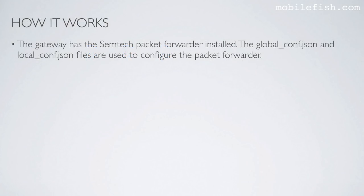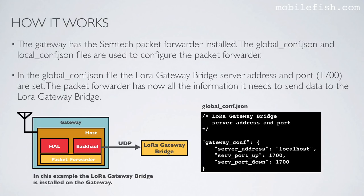The gateway has the Semtech packet forwarder installed. The global_config.json and local_config.json files are used to configure the packet forwarder. In the global_config.json file, the LoRa Gateway Bridge server address and port are set. Here you set the LoRa Gateway Bridge server address and its ports. The packet forwarder then has all the information it needs to send data to the LoRa Gateway Bridge. In this example, the LoRa Gateway Bridge is installed on the gateway because of the word localhost.